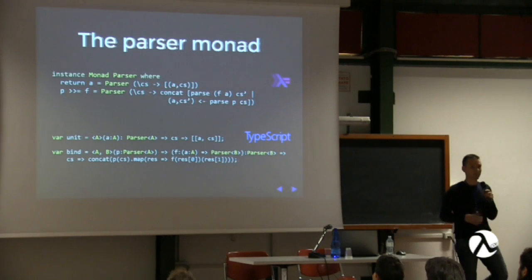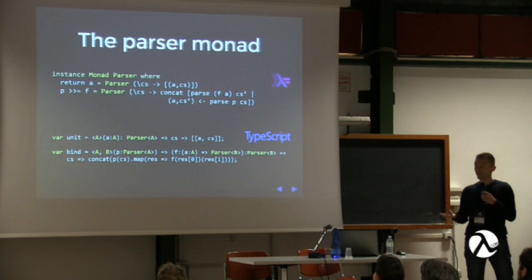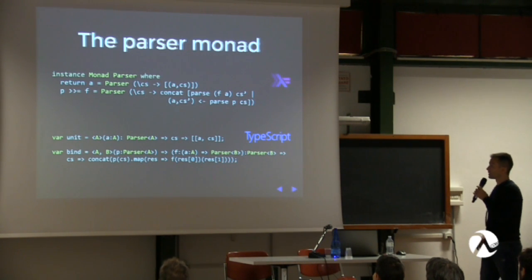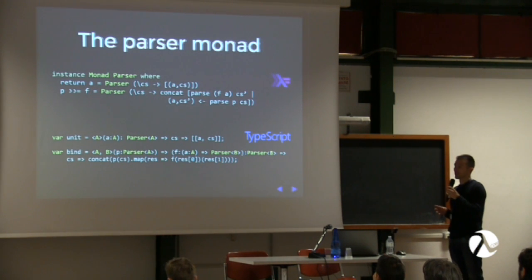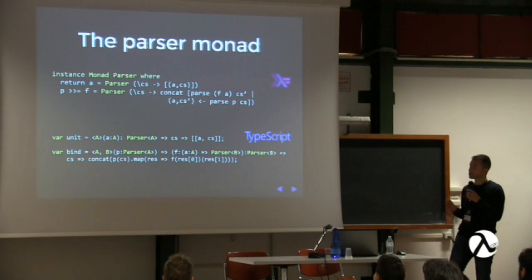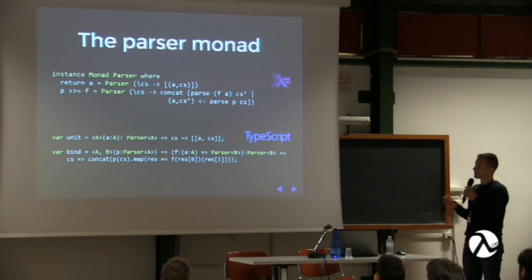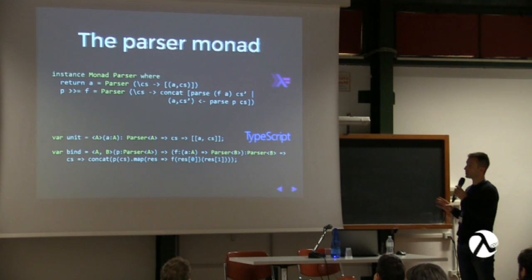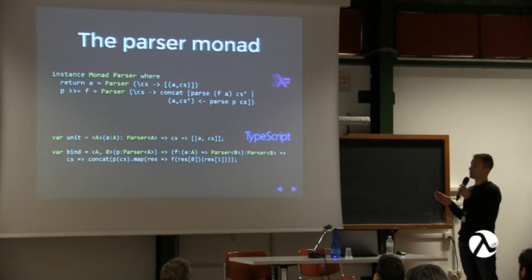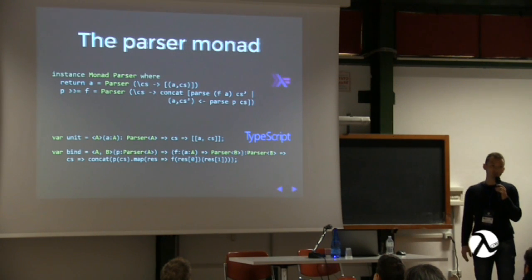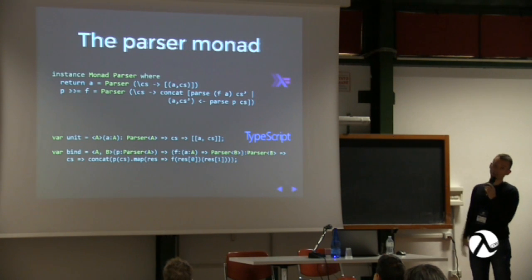The parser monad is a special kind of monad — there are many kinds. We can see the implementation here. The unit function takes a value of type A and returns a parser that doesn't consume any input, but simply resolves the value it is given — so A goes straight into the first item of the returned tuple.